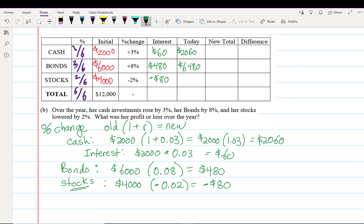To show how the stocks would look when we calculate the new value: $4,000 × (1 - 0.02) = $3,920, or $4,000 - $80. This gives us a total of $460 worth of interest ($60 + $480 - $80), giving us now a total of $12,460.